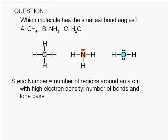Now let's determine the steric number for the central atoms. For the carbon atom in methane, the steric number is four. Each single bond counts as one region of high electron density. Here we have four single bonds: one, two, three, four.